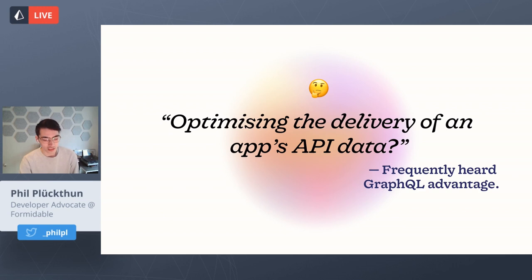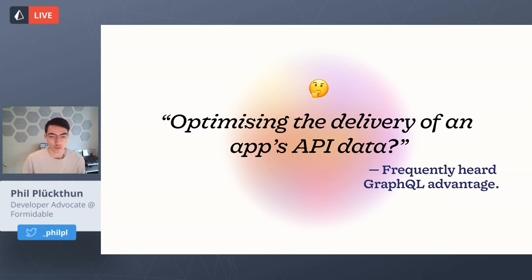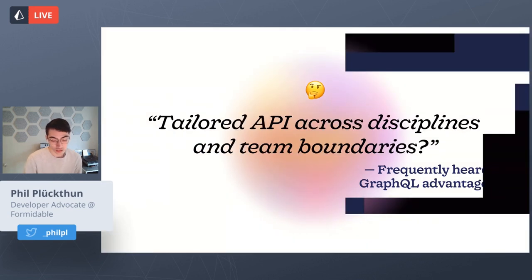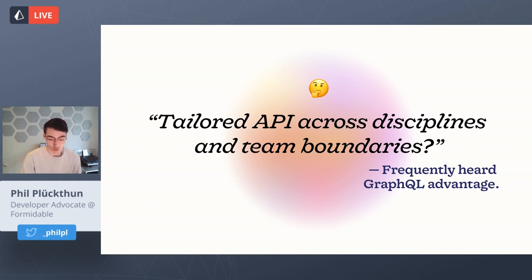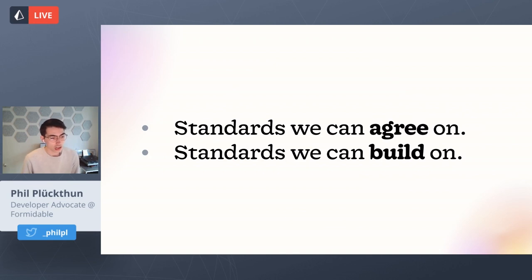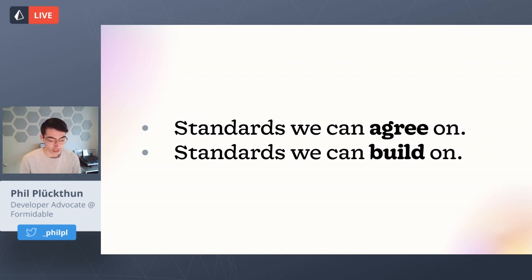Often we hear that GraphQL is good at optimizing API data delivery — we don't over- or under-fetch, we specify what we want, which can improve performance, and we don't have waterfalls. Development speed can be improved too. It's common to build backend-for-frontends with GraphQL; it's a good way to document an API and improve communication between backend and frontend teams.